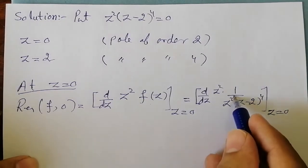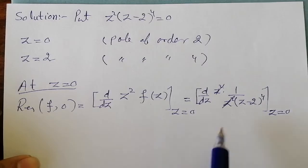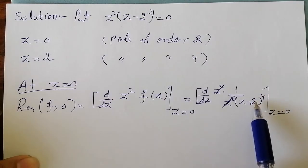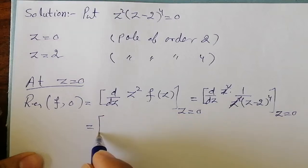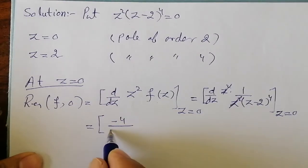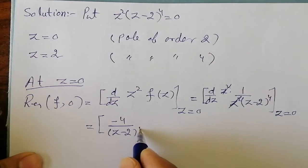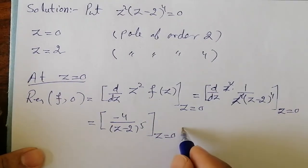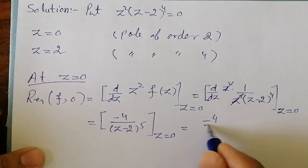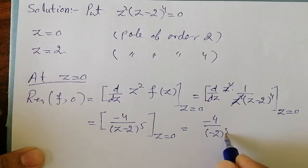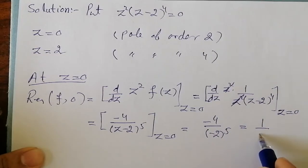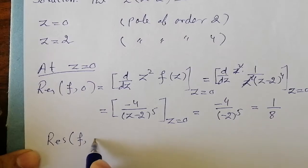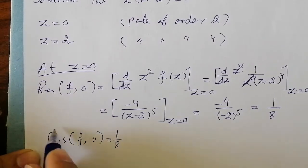The z² cancels, leaving d/dz of 1/(z−2)⁴, evaluated at z = 0. Differentiating gives −4/(z−2)⁵. Substituting z = 0: −4/(−2)⁵ = −4/(−32) = 1/8. So the residue of f at the pole z = 0 is 1/8.